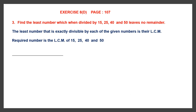So let's begin by finding the LCM of 15, 25, 40 and 50. We begin by dividing by 5, which is a prime number. 5 threes are 15, 5 fives are 25, 5 eights are 40, 5 tens are 50.